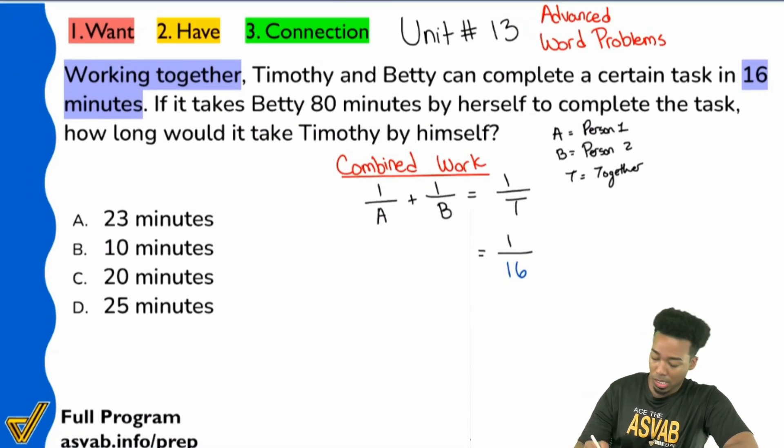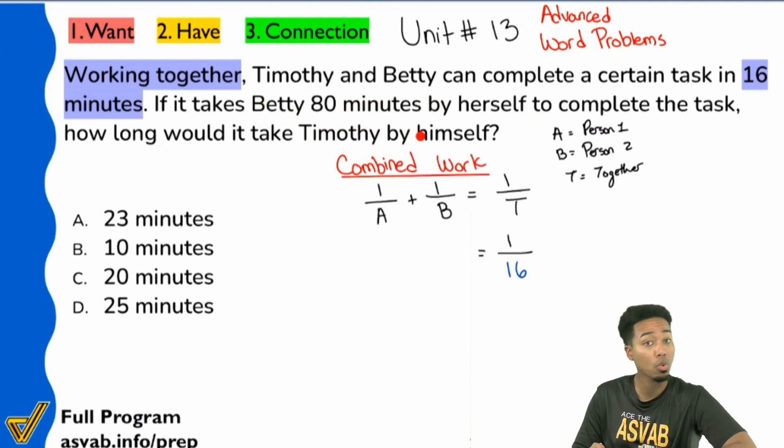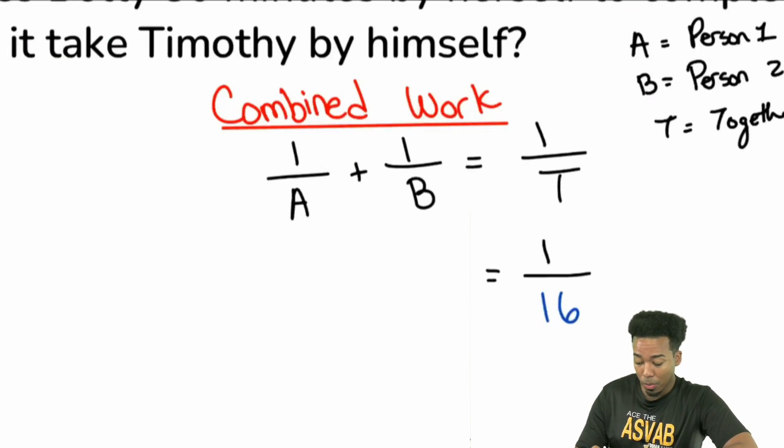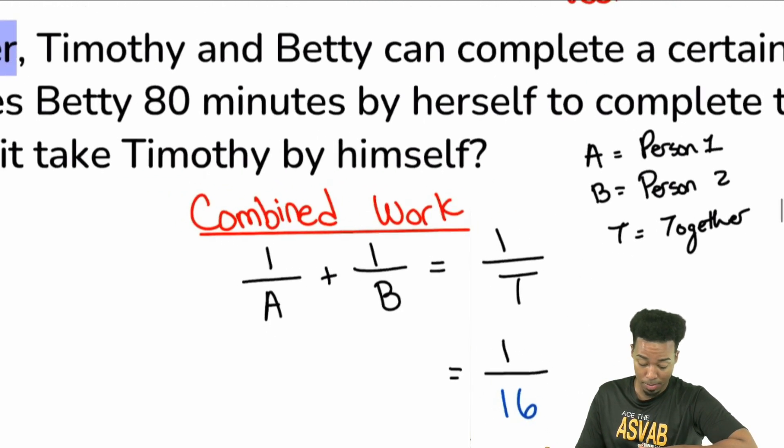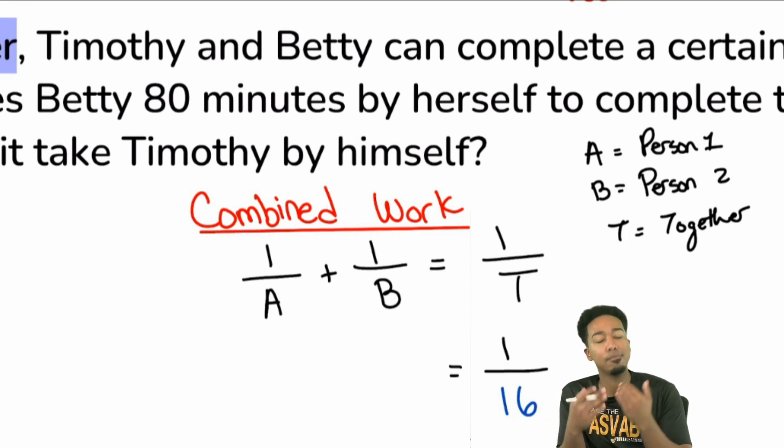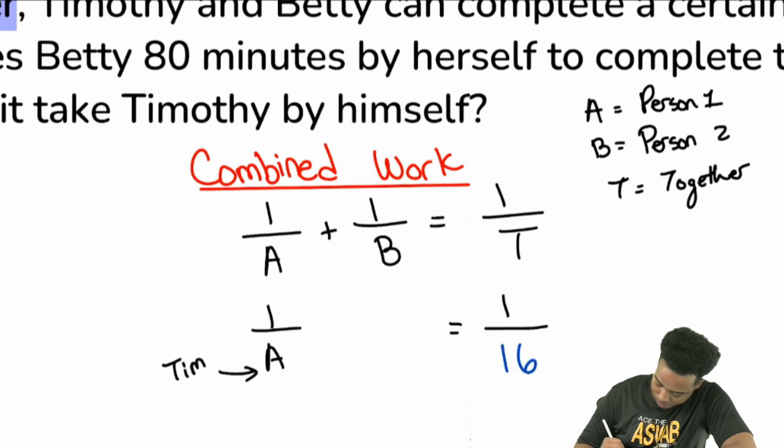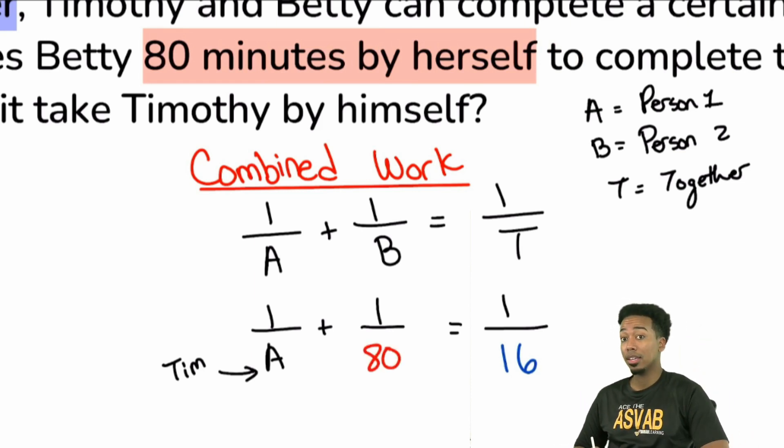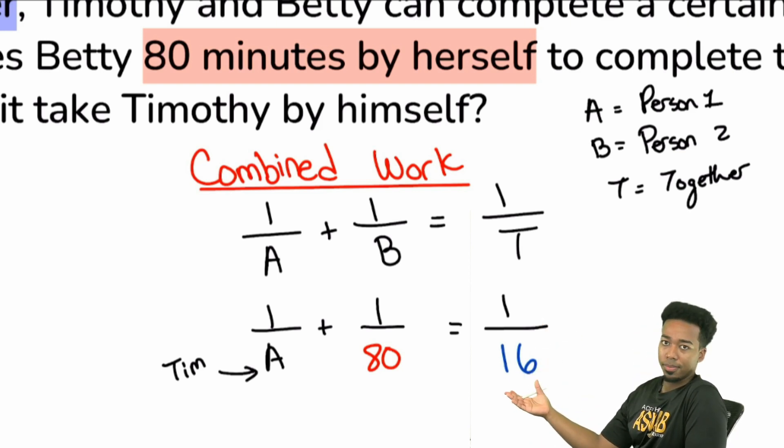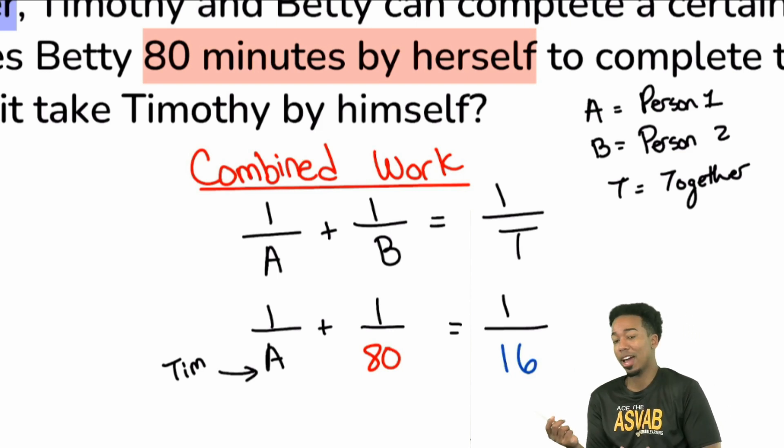Next up it says it takes Betty 80 minutes working by herself. And then we're looking for how long it'll take Timothy to work by himself. Okay cool. So it doesn't matter which one you pick. A could be Timothy or A could be Betty. It doesn't really matter at all. One plus two is the same as two plus one. We'll do one over A, that's Timothy. And then we'll do one over B, which that'll be Betty. It says 80 minutes by herself, so one over 80. Because what that means is by herself in one minute she has done one-eightieth of the work.